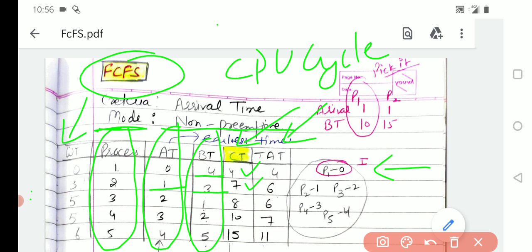Let's see process 3, it arrives at time 2 when process 1 was executing. The total completion time would be 8 because its burst time is 1. So 7 plus 1 would be 8.